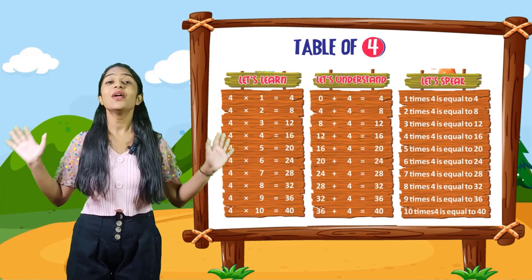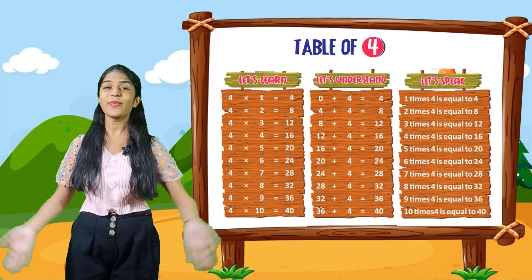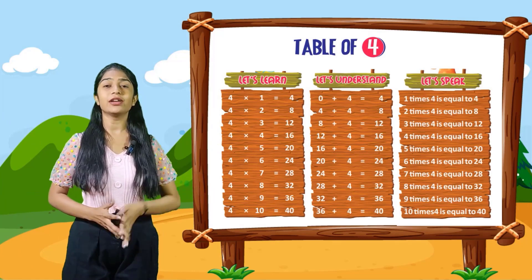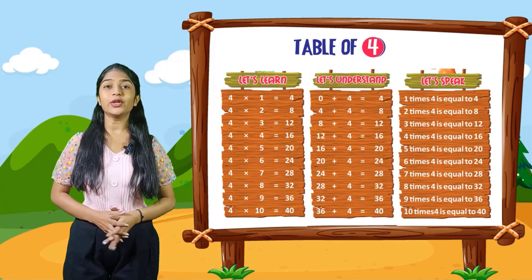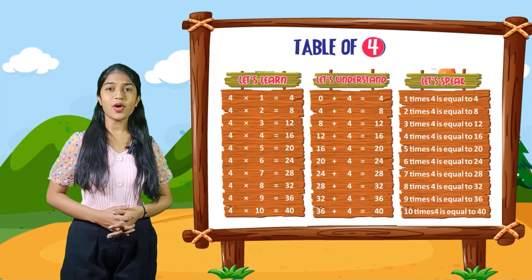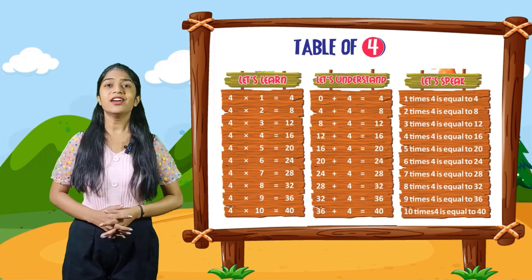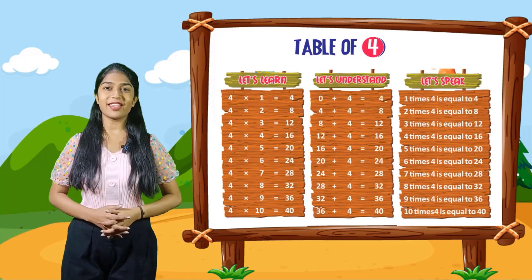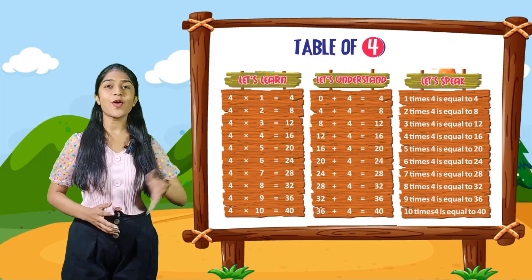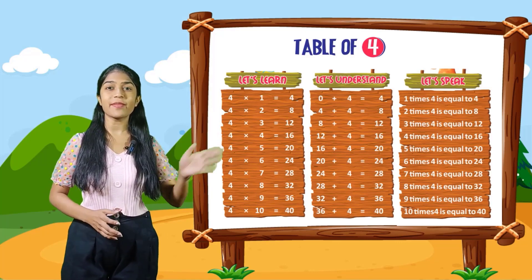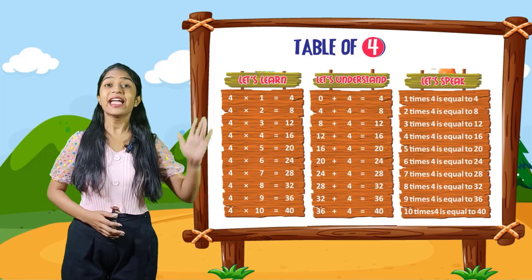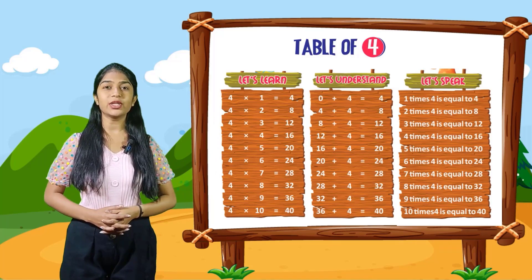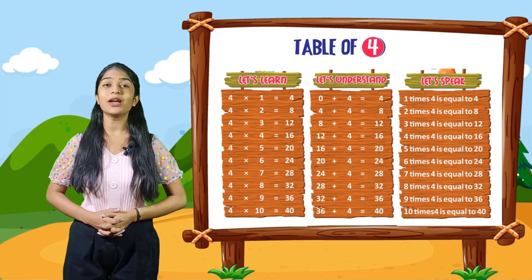So now let's speak. You have to speak out with me. 1 times 4 is equal to 4. 2 times 4 is equal to 8. 3 times 4 is equal to 12. 4 times 4 is equal to 16. 5 times 4 is equal to 20. 6 times 4 is equal to 24. 7 times 4 is equal to 28. 8 times 4 is equal to 32. 9 times 4 is equal to 36. 10 times 4 is equal to 40.